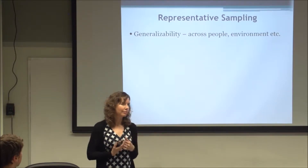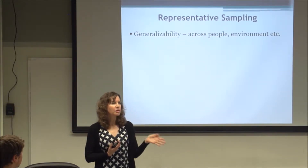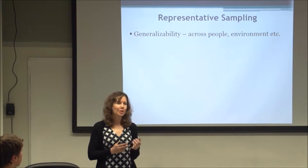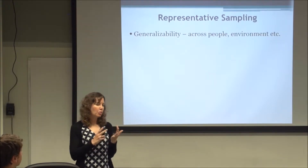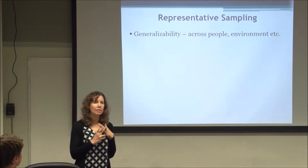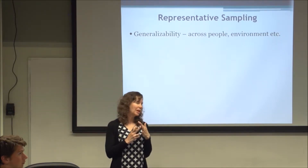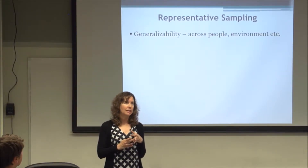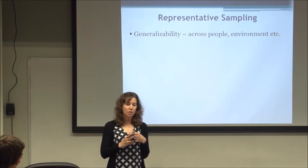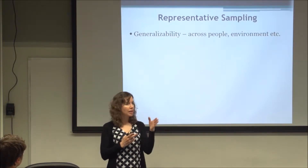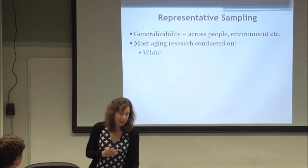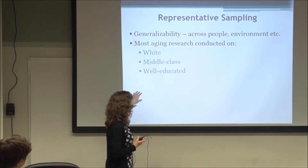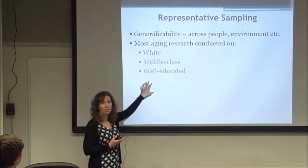What about education? Do we have a good spread of education? We see people who are more educated. What about race? Especially in this area we see predominantly white participants. And just because of age we have a larger percentage of female participants, but we also tend to see a lot of middle-class participants. So a lot of our aging research has been on white, middle-class, well-educated older adults.